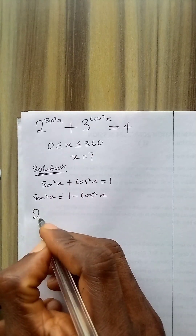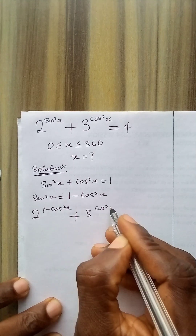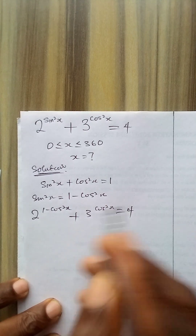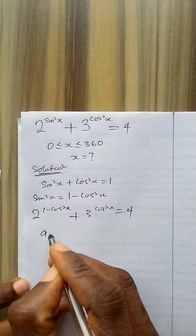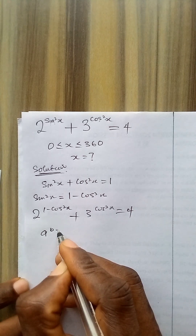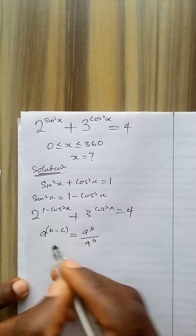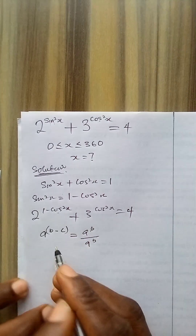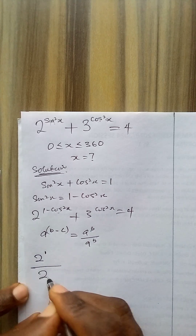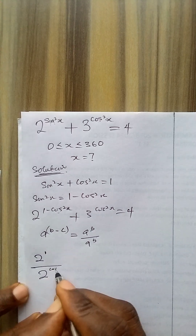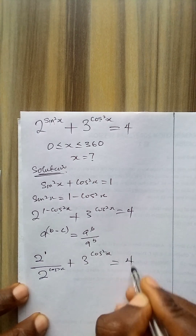Therefore, 2 to the power (1 minus cos squared x) plus 3 to the power cos squared x is equal to 4. Now if I apply the subtraction law of indices — a to the power (b minus c) equals a to the power b over a to the power c — I will now have 2 to the power 1 over 2 to the power cos squared x, plus 3 to the power cos squared x, is equal to 4.